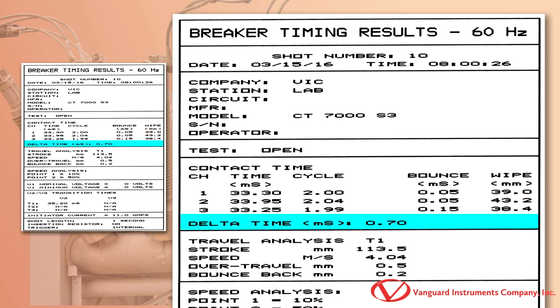The delta time is shown here. This is the difference between the fastest and slowest contact time.